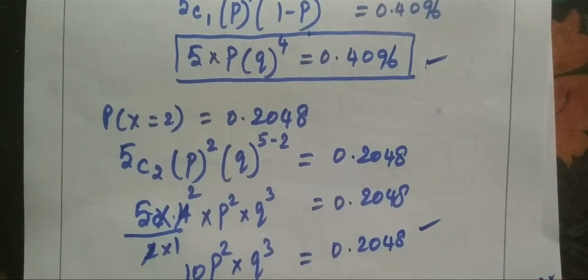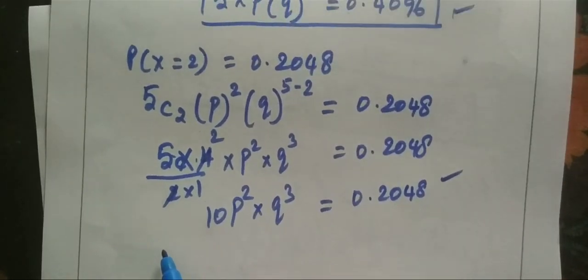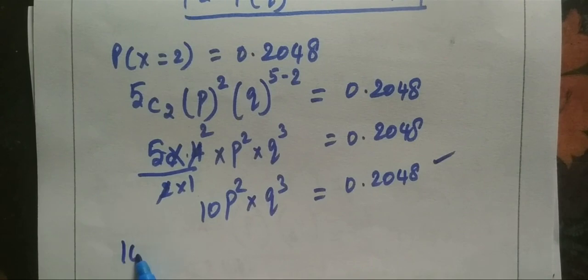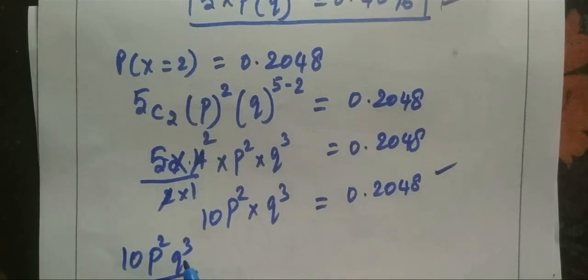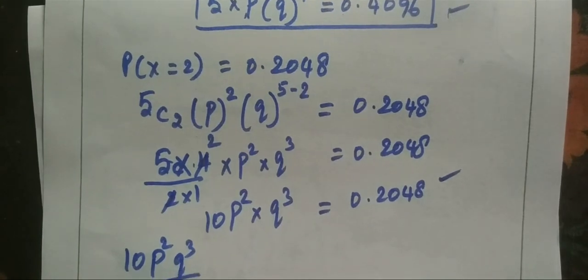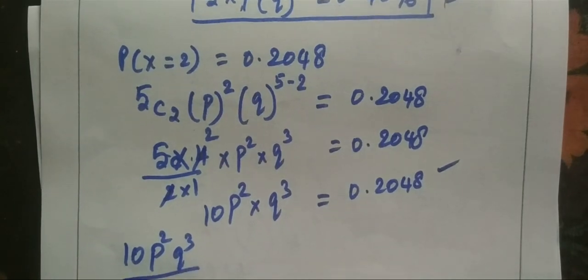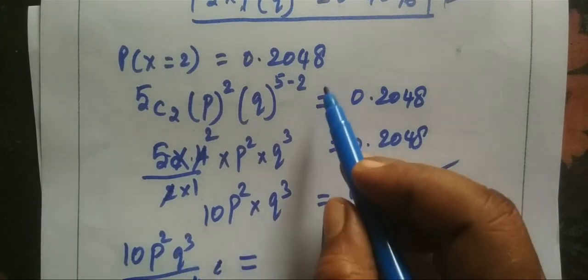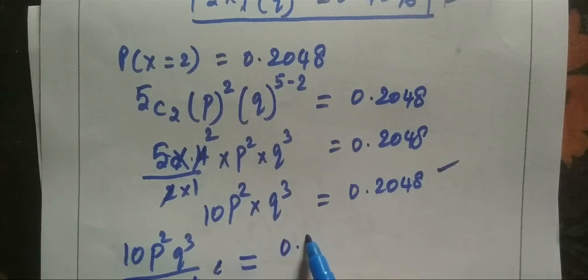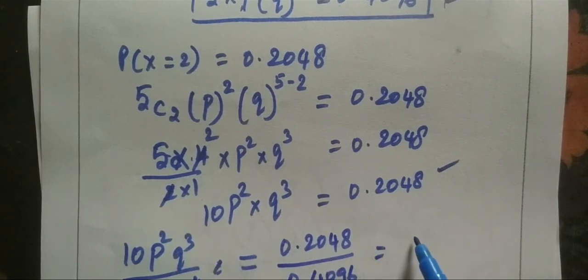So, 10p squared q cubed equals 0.2048. This is step 2. Now, we divide. The numerator and denominator: p squared q cubed divided by step 1, 5p times q to the power 4.